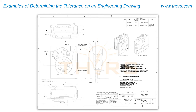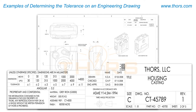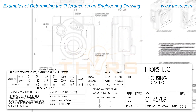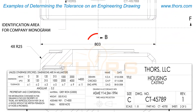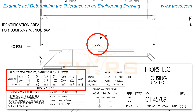In the next example, the tolerancing information in the title block is presented differently. To determine the tolerance for the dimension 803 millimeters, identify the range in the title block that this number falls within.